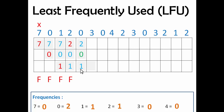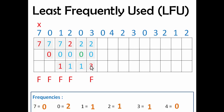The next page is 3, so we have to decide which page to remove. We check 2, 0, and 1 — their frequencies are 1, 2, and 1. Pages 1 and 2 have the same frequency, so we apply FIFO and check which came first from left to right — 1 came first, so we remove 1 and add 3. There will be a page fault. We increase 3's frequency and reset 1's frequency, putting a cross over 1 to mark it as removed.